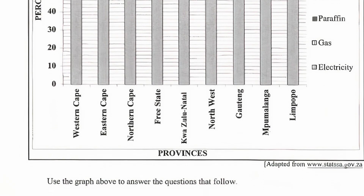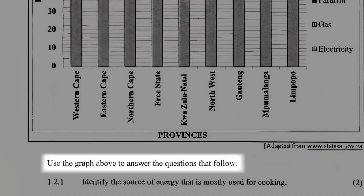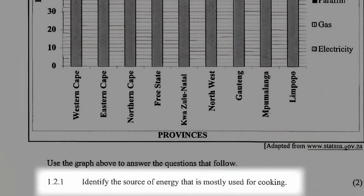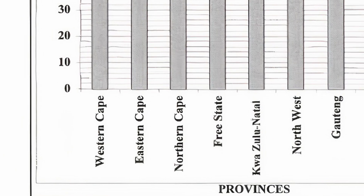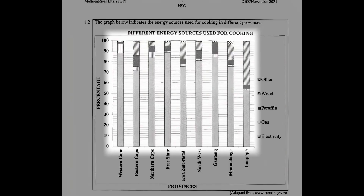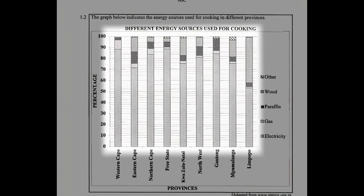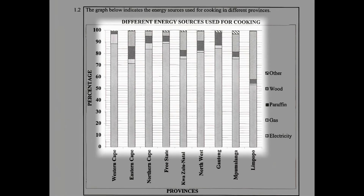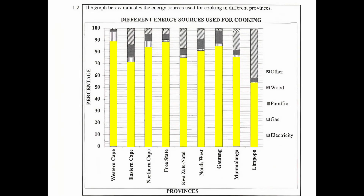Now let's look at the questions. We are instructed to use the graph above to answer the questions that follow. Question 1.2.1 asks us to identify the source of energy that was mostly used for cooking. Since the question didn't stipulate a particular province, we can assume we are expected to consider the whole of South Africa. From the graph, we see that electricity is the source of energy mostly used for cooking. So the answer is electricity.